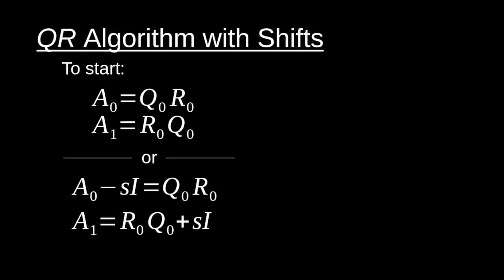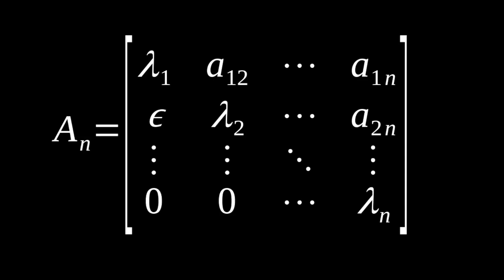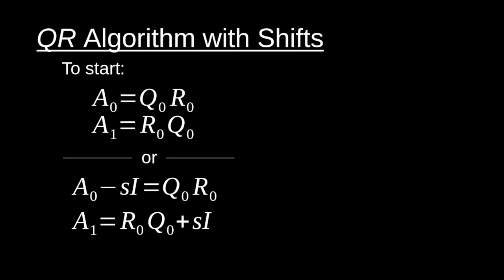We take A0 and subtract off some scalar value S times the identity matrix, which shifts the values of our diagonal — because that's ideally where our eigenvalues are going to be. After a number of iterations with the normal QR algorithm, we expect zeros below the diagonal and our eigenvalues along the diagonal. We then do a QR decomposition of that shifted matrix, compute a similar matrix using R0 and Q0, and re-add the shift.